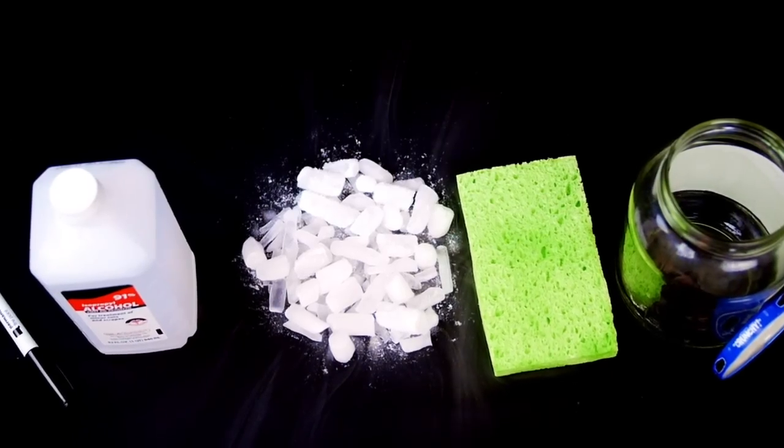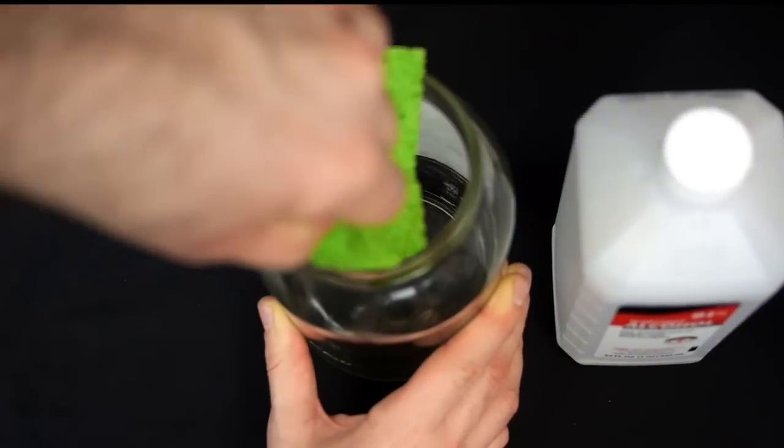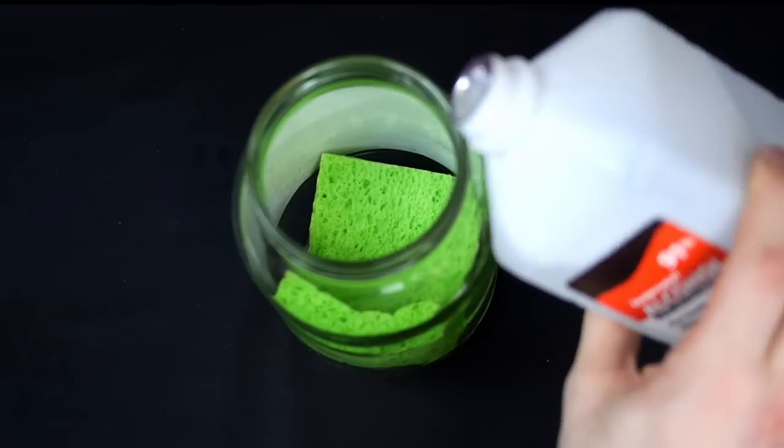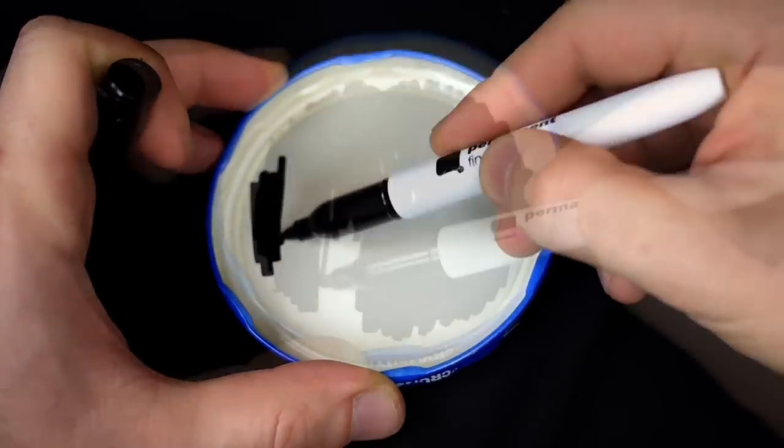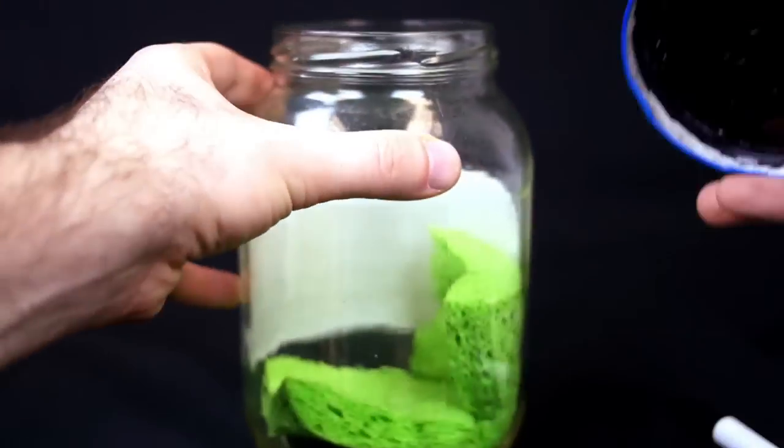Here's how to actually see them fly by. First, stuff the sponge in the bottom of the jar and pour some alcohol on it. Then, color the inside of the lid black and place it on the jar.